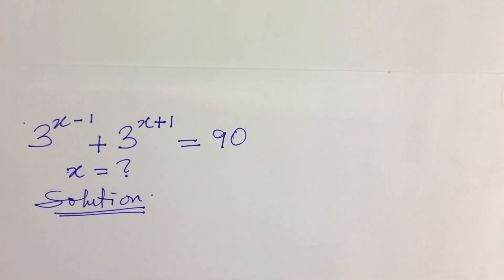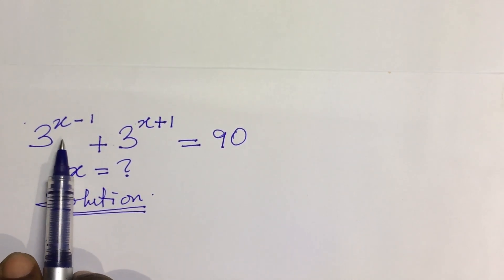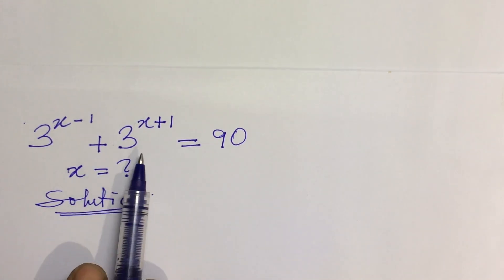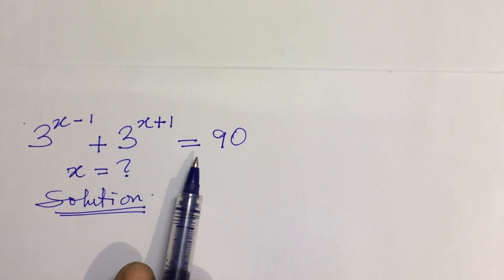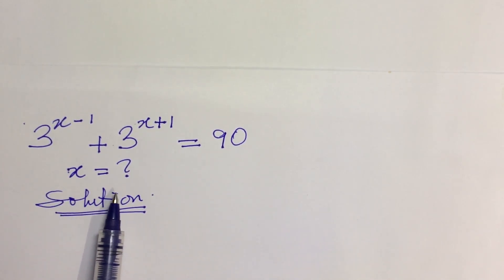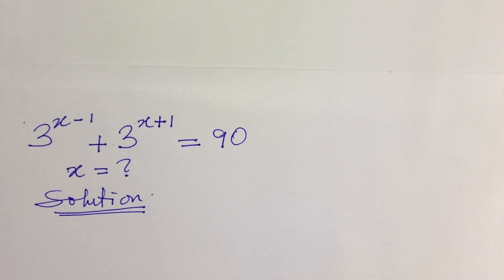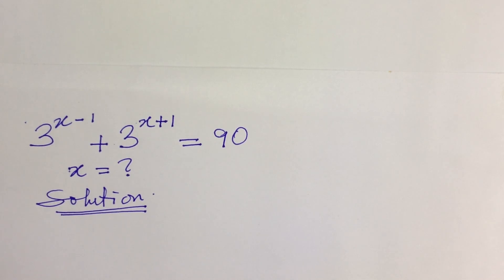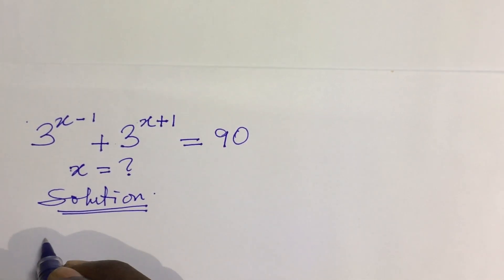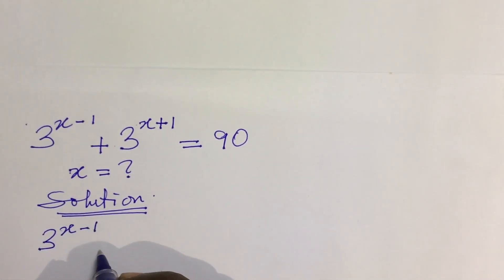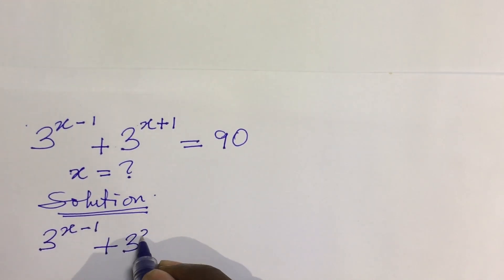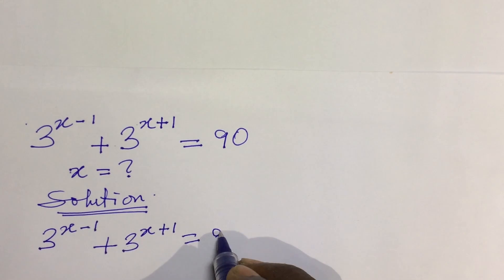Welcome everyone, this is Online Mass TV and my name is Jake's Animal. Today we have a simple challenge on exponential equations. The question is: 3 to the power of x minus 1, plus 3 to the power of x plus 1, equals 90. What will be the value of x? If you are new to this channel, kindly subscribe and turn on the bell notification, because here at Online Mass TV we drop new videos every day.